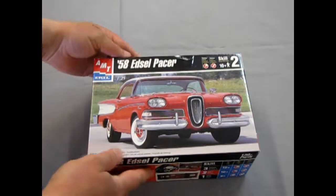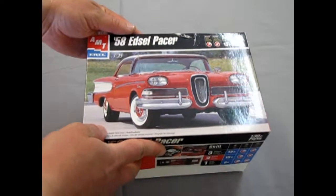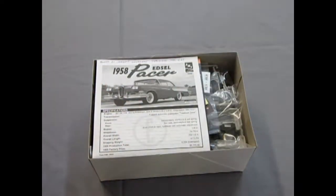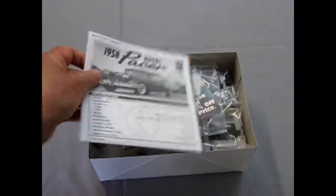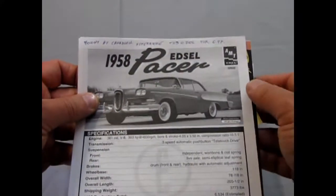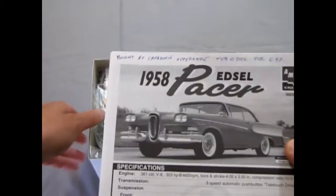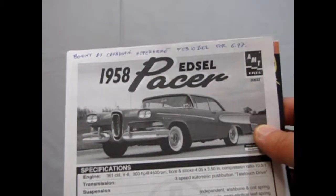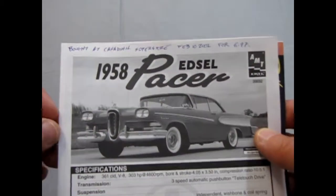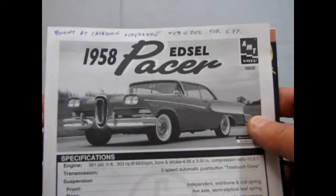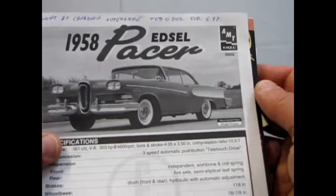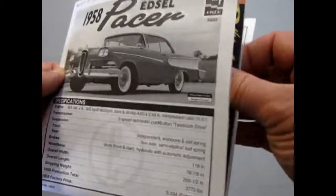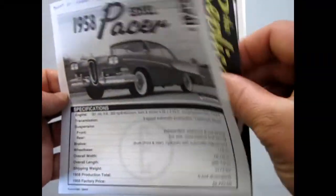Now let's open up the lid on our 1958 Edsel Pacer by AMT Ertl. Here again I've got the instructions with where I bought the model and when and what I was thinking at the time. Bought at Canadian Superstore, which was a grocery store, still is, on February 10th, 2002 for six dollars and 97 cents, another price you will never ever see again in model kits.